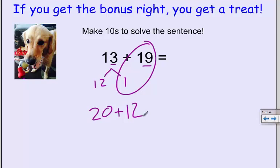And then I've got to add 12 back to it. So, I know 2 tens plus 1 tens is 3 tens. 0 ones plus 2 ones is 2 ones. So, 13 plus 19 must be 32.